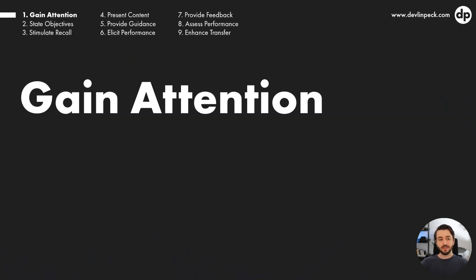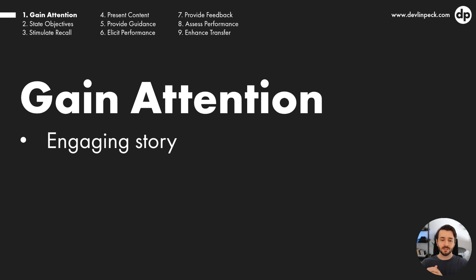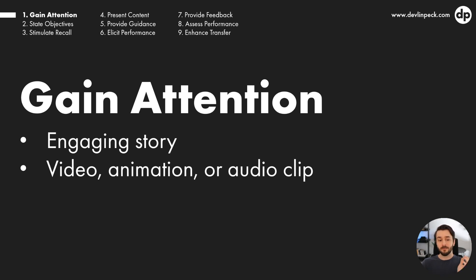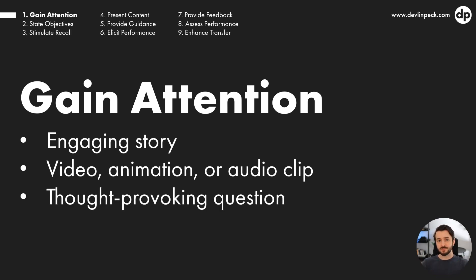The first one is gain attention. These events don't have to be done in order, but most of the time you do want to start by gaining your audience's attention. Gagne presents this as a change in stimulus — a simple example like turning the lights on and off in a classroom. But you can also do this with an engaging story, video, animation, audio clip, or interaction.